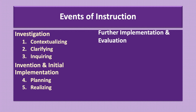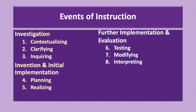The third category of further implementation and evaluation includes four steps. Groups check their project against the criteria to see if it meets the specifications; the first attempt will likely need some modifications. The second step is modifying, where students rework their project to address deficiencies they have identified, then retest and modify until they have a finished project that meets the stated criteria. The next step is interpreting, requiring students to describe the value of the project relative to their backgrounds and experience. Finally, students engage in reflecting, where they broaden their evaluations and put the project in a larger context, especially as it might be valuable to others.